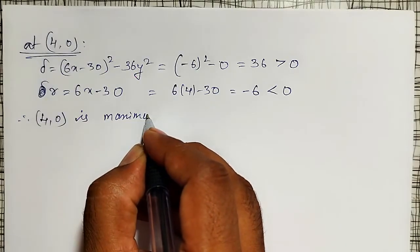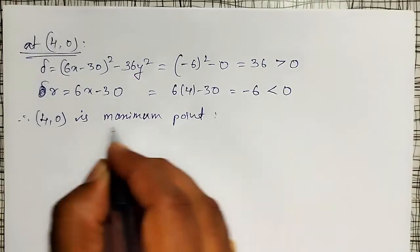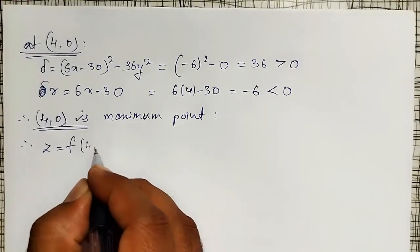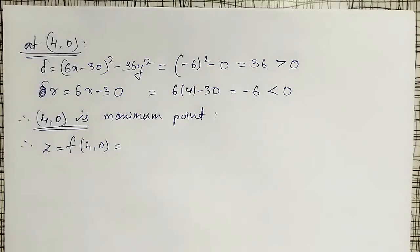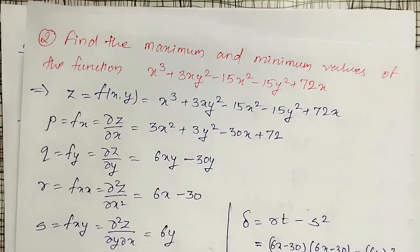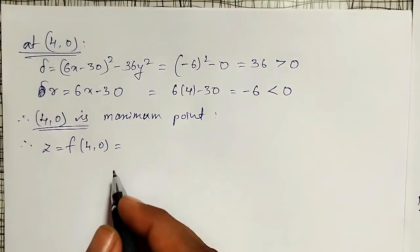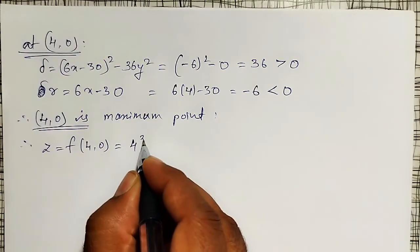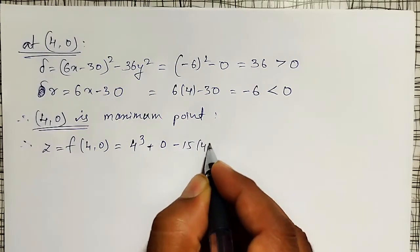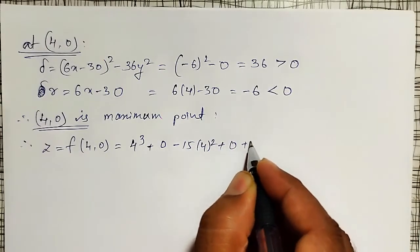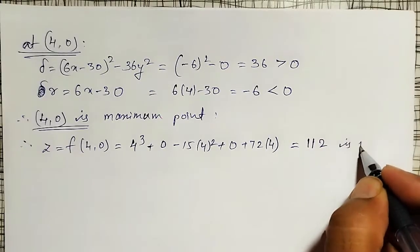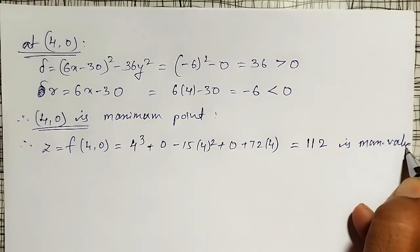Since (4, 0) is a maximum point, the maximum value is z = f(4, 0). Substituting x = 4 and y = 0 into the given equation: 4³ + 3(4)(0²) - 15(4²) + 0 + 72(4) = 64 + 0 - 240 + 0 + 288 = 112. So 112 is the maximum value.